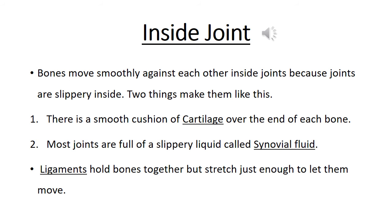It is like the way oil in a car engine keeps the pistons running smoothly. Cartilage is a smooth layer of body tissue which covers and protects the ends of the bones in a joint. Ligaments are strong bands of body tissue which connect and support two bones or cartilage. Ligaments keep a joint from moving too far out of line.